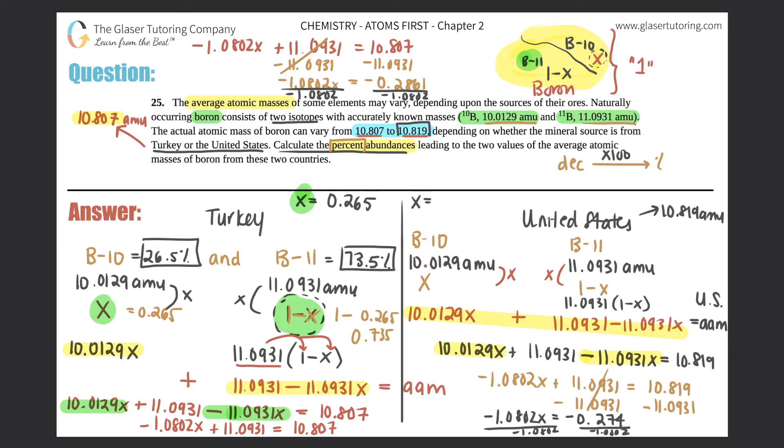So negative 0.2741 divided by negative 1.0802 is we should get three sig figs. So 0.254 if we round it properly. So look at these. I mean, they're very similar for the X values. This one was just a five at the end. This one is the four at the end. So that means that for boron-10, who was X, this is just 0.254. For boron-11, which was one minus X, this is one minus 0.254. So if I just do one minus 0.254, you get 0.746.